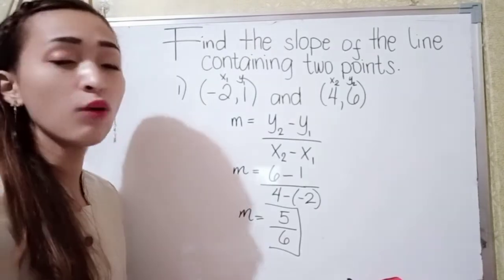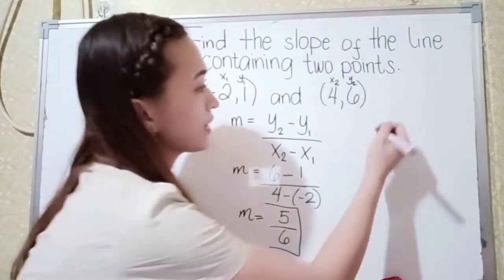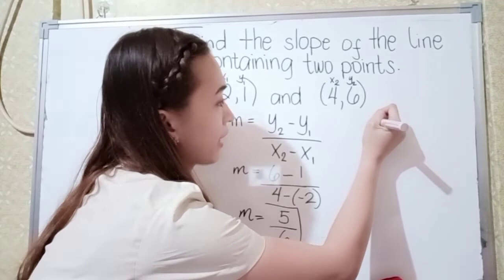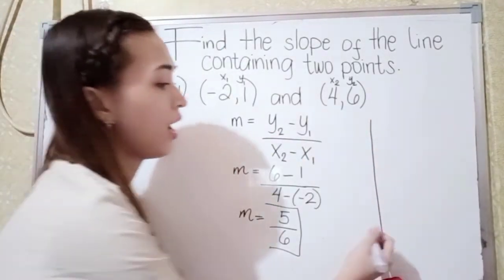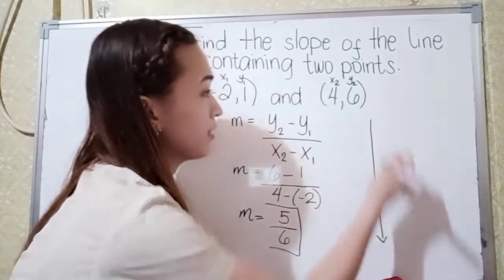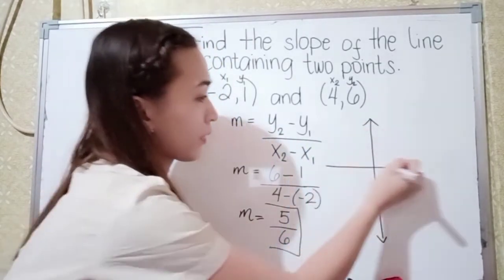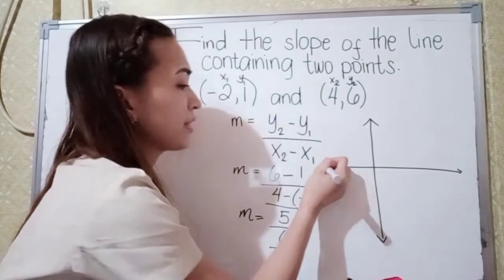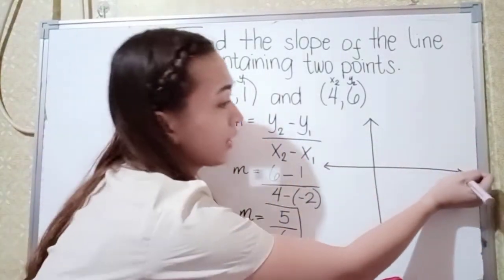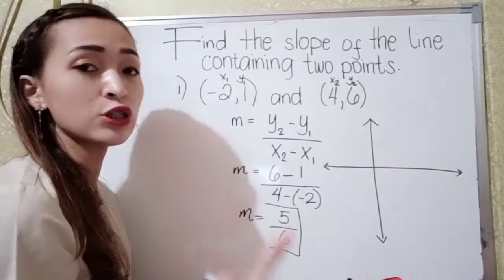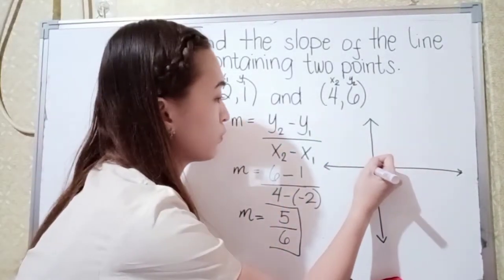But how about if we have the graph? If you don't know or forget the formula, we have this technique. What you're going to do is just first plot the two points. So we have negative 2, 1.